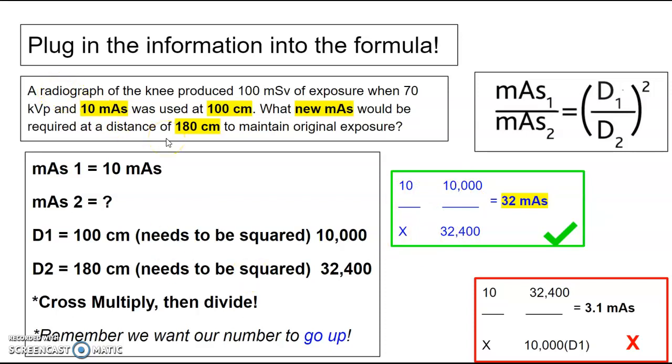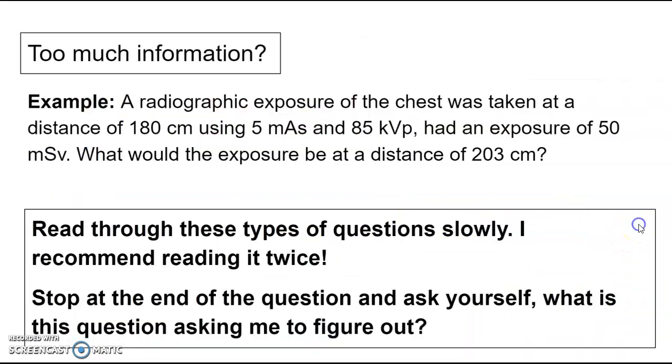Now this is asking me to figure out a new mAs at a distance that's further away. Is my mAs going to go up or is it going to go down? Anytime you increase distance, you're going to need more mAs. So we want to go up in our answer. And when I plugged it in this way, I got 32 mAs. Is that what I want? Yes. If you put your distances in the wrong spot, your number went down. And that's not what we want, right?